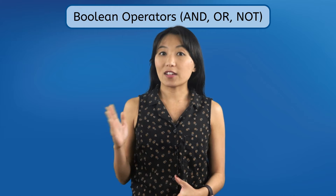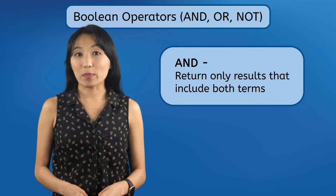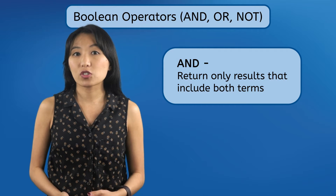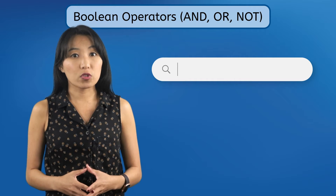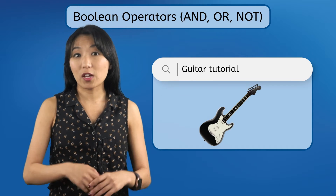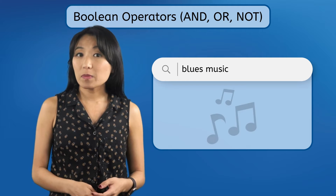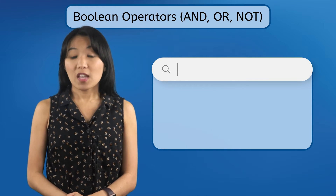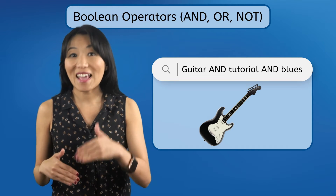First, you can expand or limit your search results using Boolean operators. These operators — the words AND, OR, and NOT — may look familiar to you if you've already taken ME Academy's Intro to Programming course. The AND operator can be placed between two terms to make sure that only results mentioning both of the entered terms appear. This is helpful if a keyword search is giving you too many irrelevant results. For instance, if you want to learn to play blues music on the guitar, a search for just "guitar tutorial" would be full of tutorials to play all kinds of different guitar styles. And maybe blues would be one of them. A search for "blues music" may result in some new songs for your playlist, but no guitar tutorials. Instead, search for "guitar AND tutorial AND blues" so that the results will only contain pages that have to do with guitars, tutorials, and blues music.